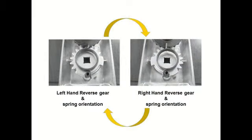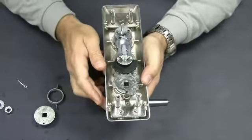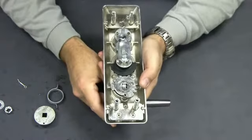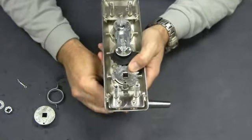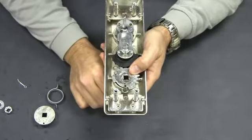Note the flat gear orientation in the pictures. For this demonstration, we will need to install the flat gear for the right hand reverse trim. Note that the bottom leg of the spring will always be on the same side as the handle. Now rotate the handle 180 degrees and reinstall.